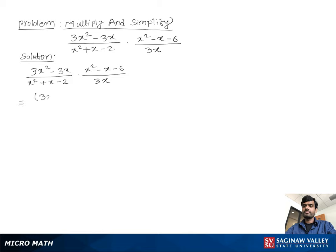So we write (3x² - 3x)(x² - x - 6) over (x² + x - 2)(3x). Now we factor. We take out 3x as a common factor from the first numerator, giving 3x(x - 1).